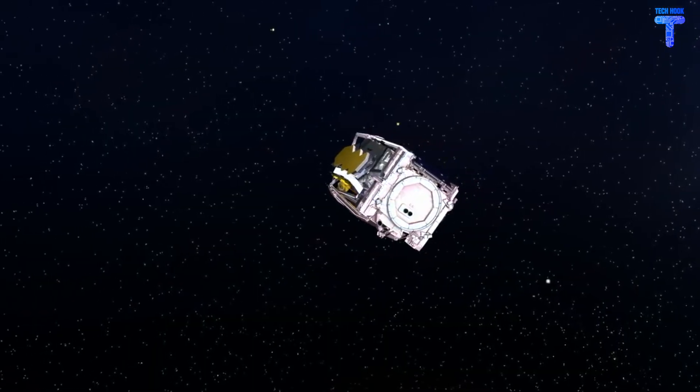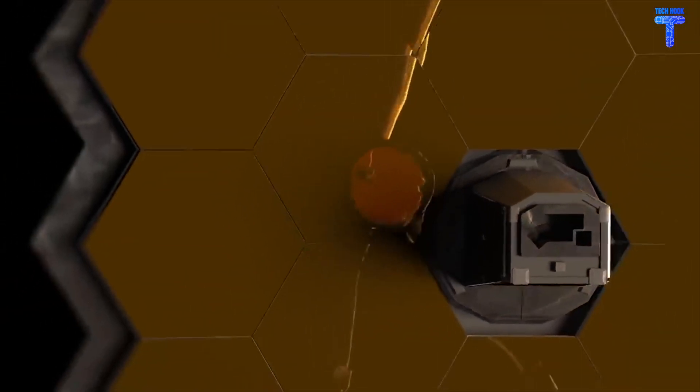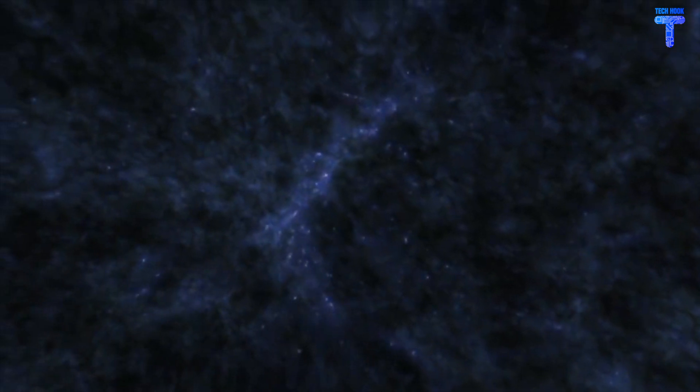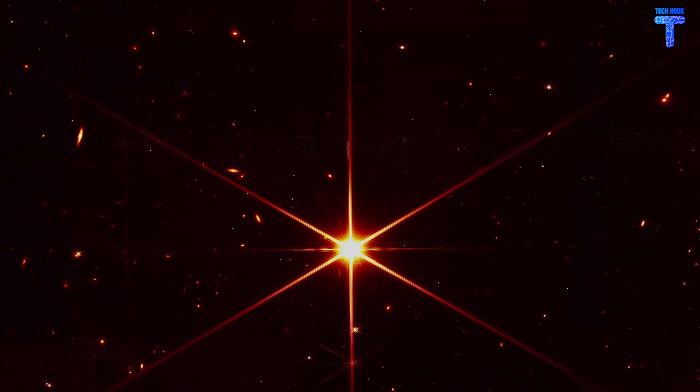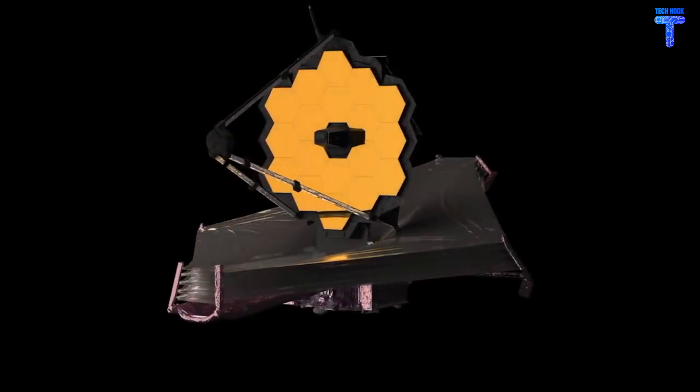Webb is the most powerful space telescope ever launched into space. It has greatly improved infrared resolution and sensitivity, which allows it to view objects which are too old, distant, or faint for the Hubble Space Telescope. On March 16, 2022, James Webb Space Telescope officials released a stunning image of a single star, which was clicked by the telescope.